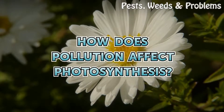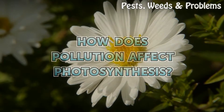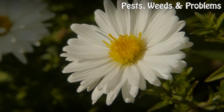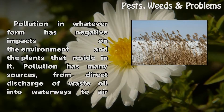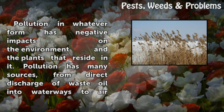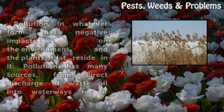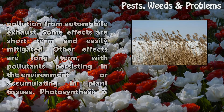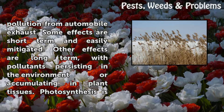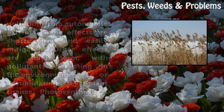How does pollution affect photosynthesis? Pollution in whatever form has negative impacts on the environment and the plants that reside in it. Pollution has many sources, from direct discharge of waste oil into waterways to air pollution from automobile exhaust. Some effects are short-term and easily mitigated, while other effects are long-term, with pollutants persisting in the environment or accumulating in plant tissues.